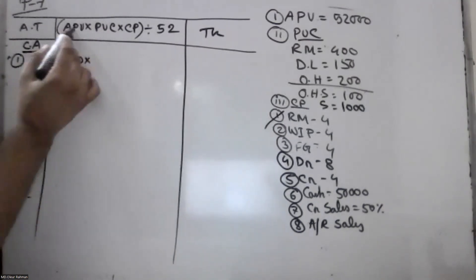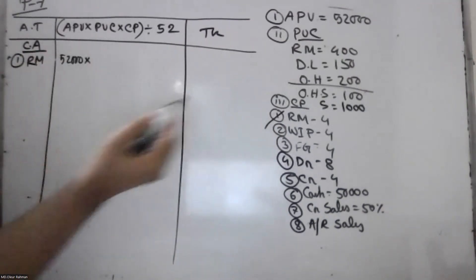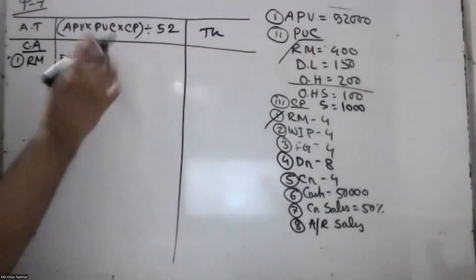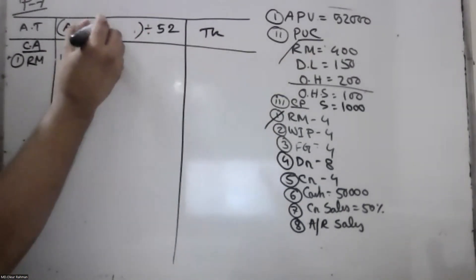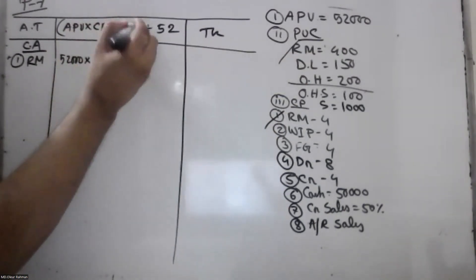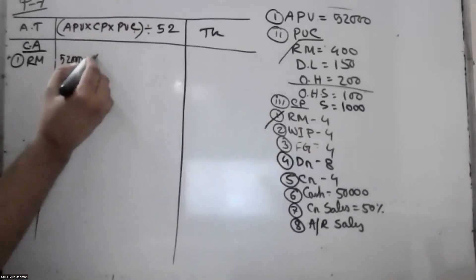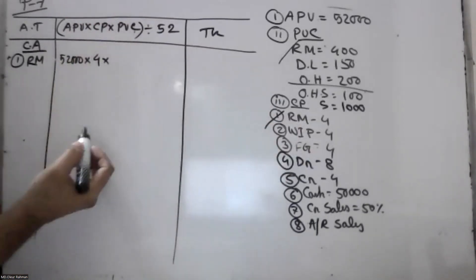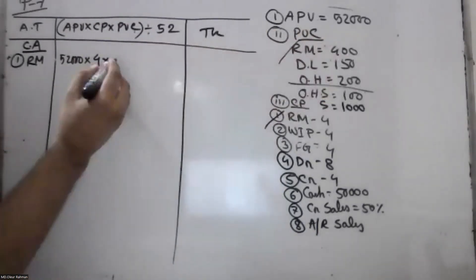APU: one item. PUC: 400. CP. PUC: 400. PUC: 600.